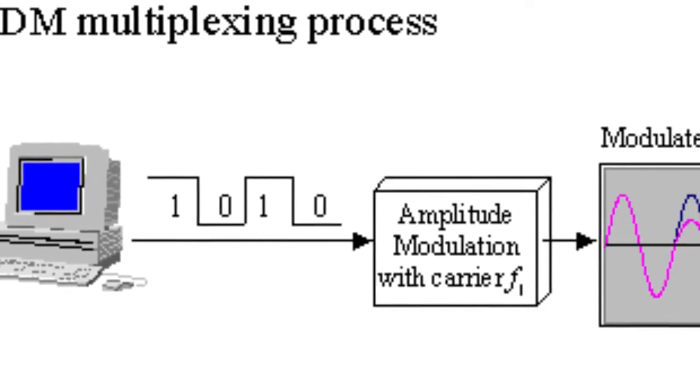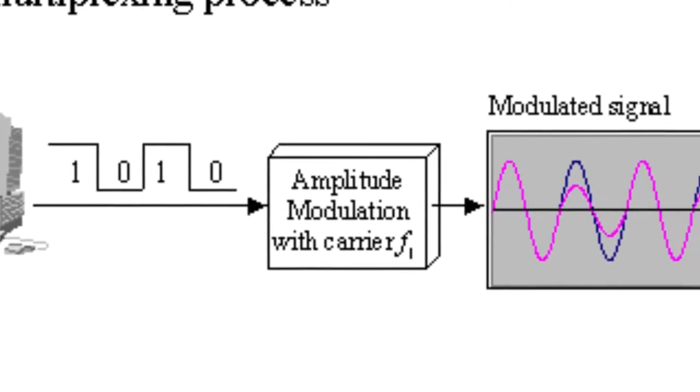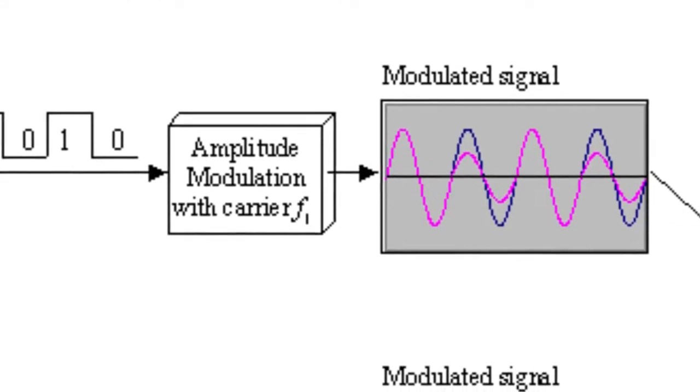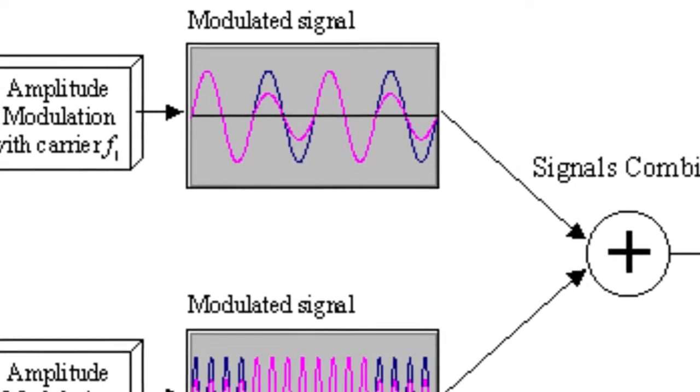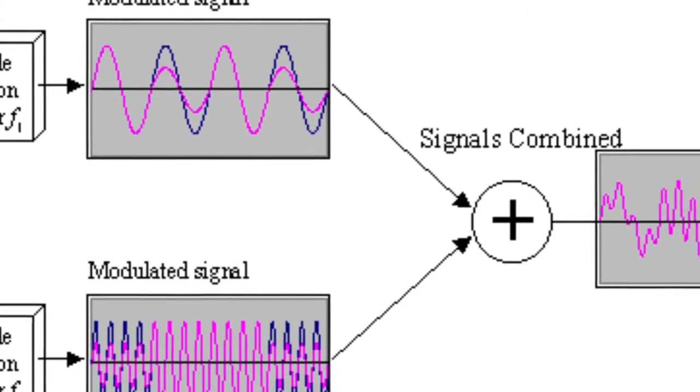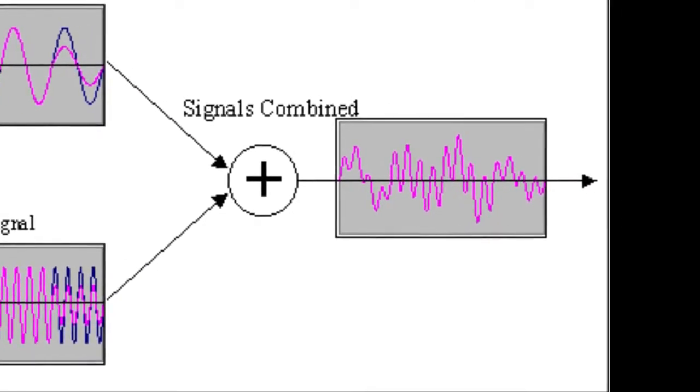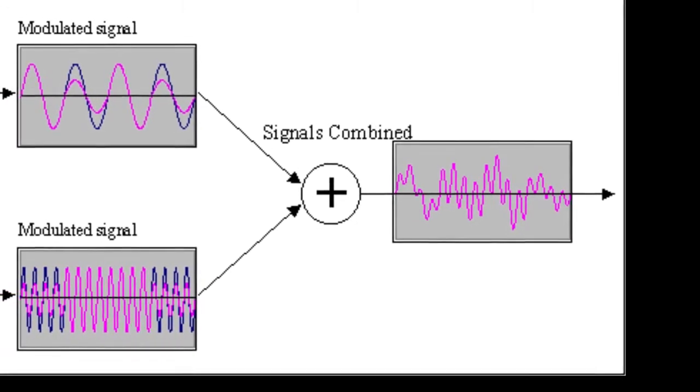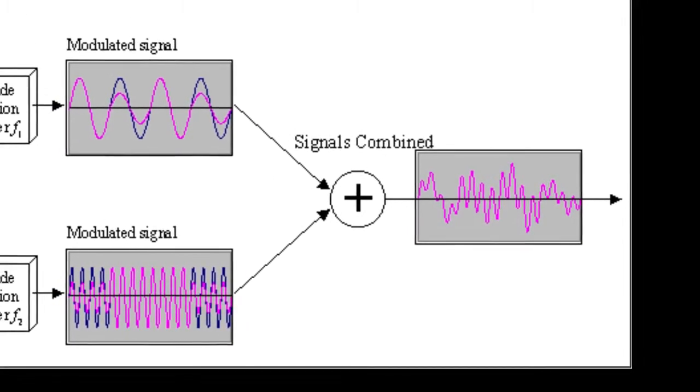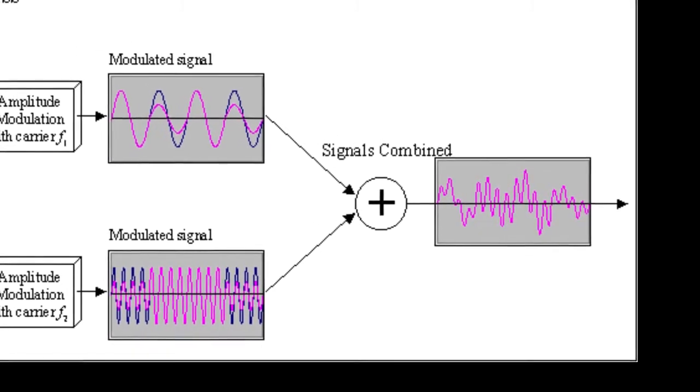FDM involves simultaneously transmitting multiple signals on different frequencies. These different frequencies, called channels, share non-overlapping portions of the total frequency band being used. Signals from different data sources are fed into a multiplexer that modulates each signal and transmits them at different frequencies.